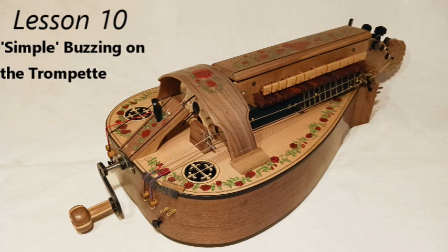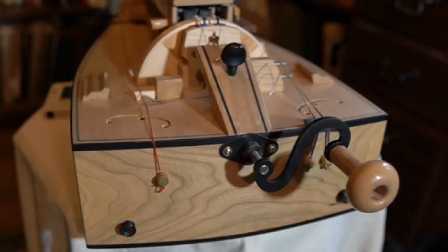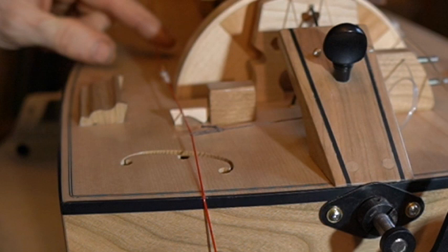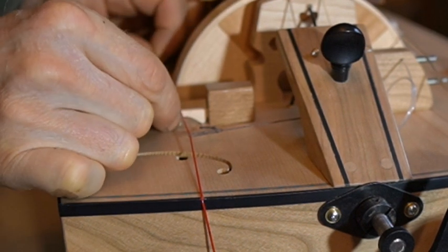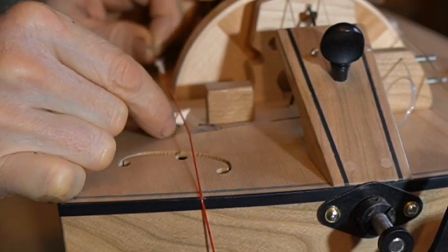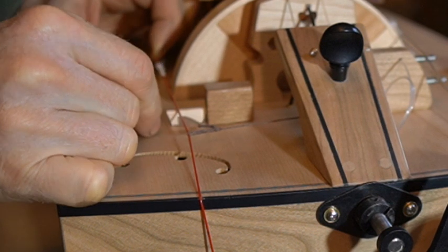Welcome to the tutorial. This time around we're going to talk about our trumpet string and getting it dialed in for a simple buzz. The trumpet string is the one with a floating bridge. The bridge is often called the dog because it tucks in there like a dog in its little doghouse.